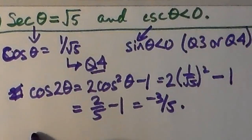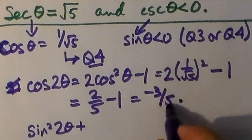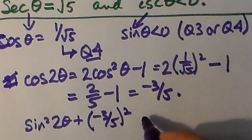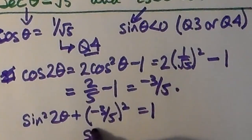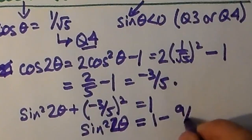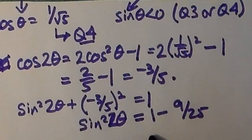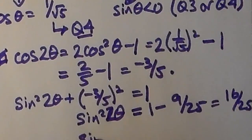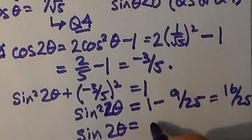Since we're dealing with 2θ, it's not necessarily positive. Using the Pythagorean identity: sin²2θ plus cos²2θ equals 1, with cos 2θ being negative 3/5 squared equals 9/25. Solving for sin 2θ: 1 minus 9/25 gives 16/25, and taking the square root — remembering we're in quadrant 4 — the answer is negative 4/5.